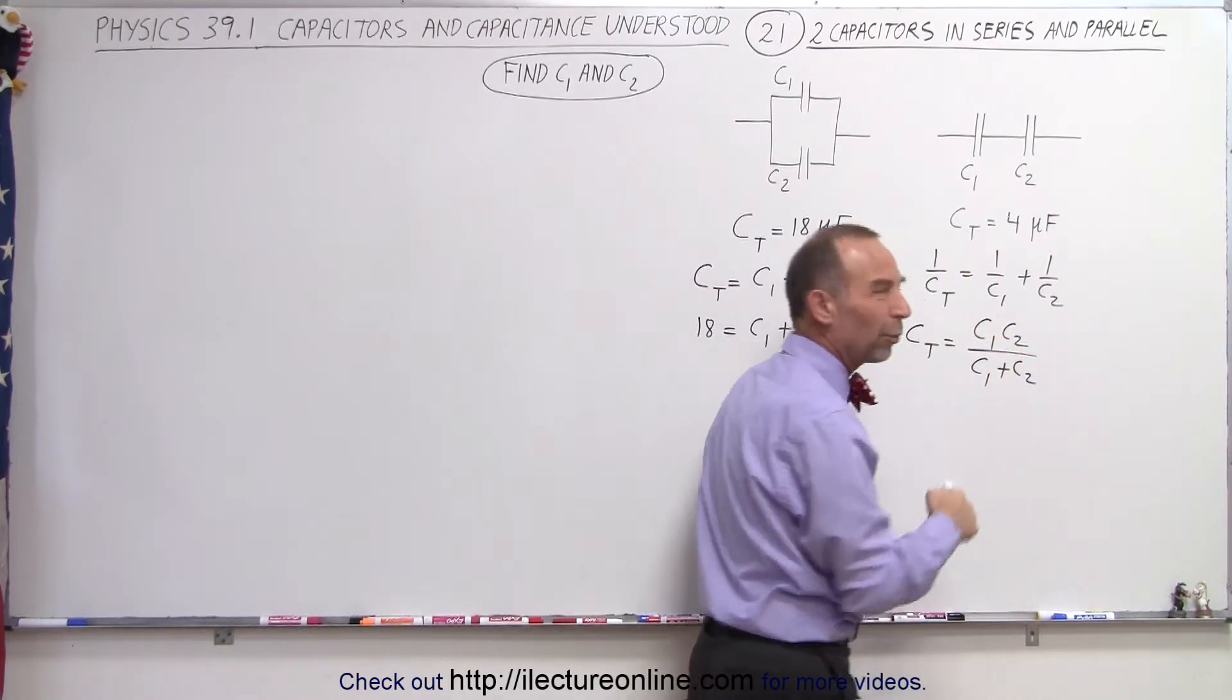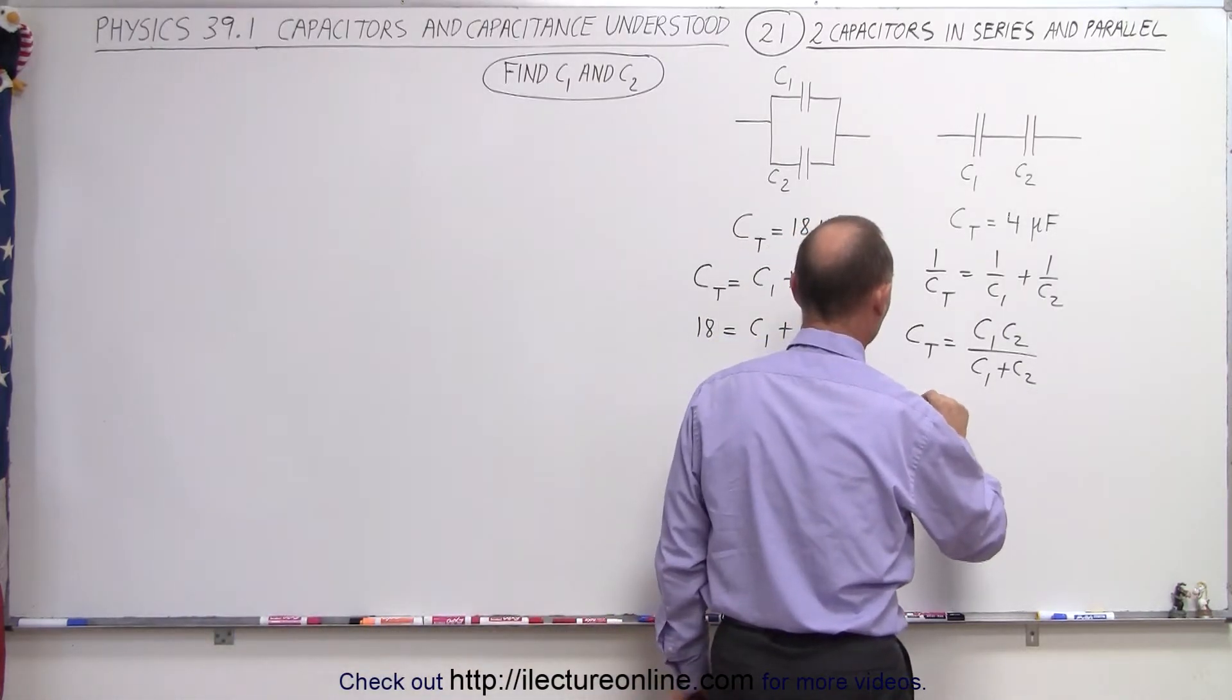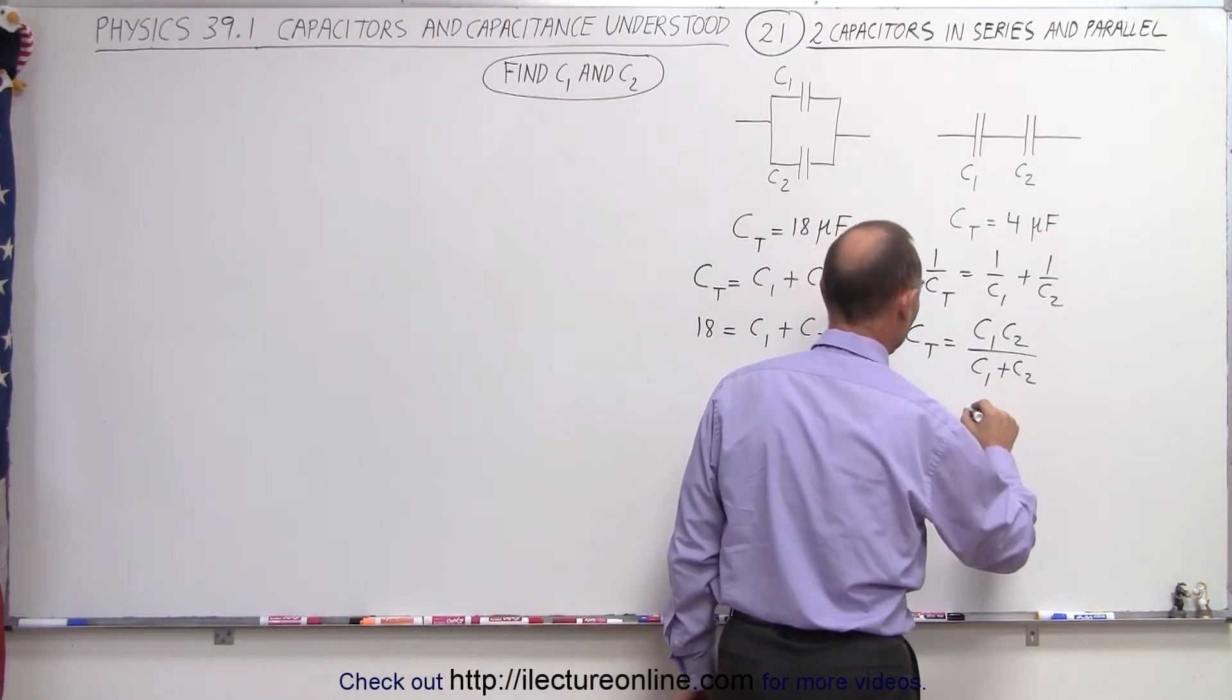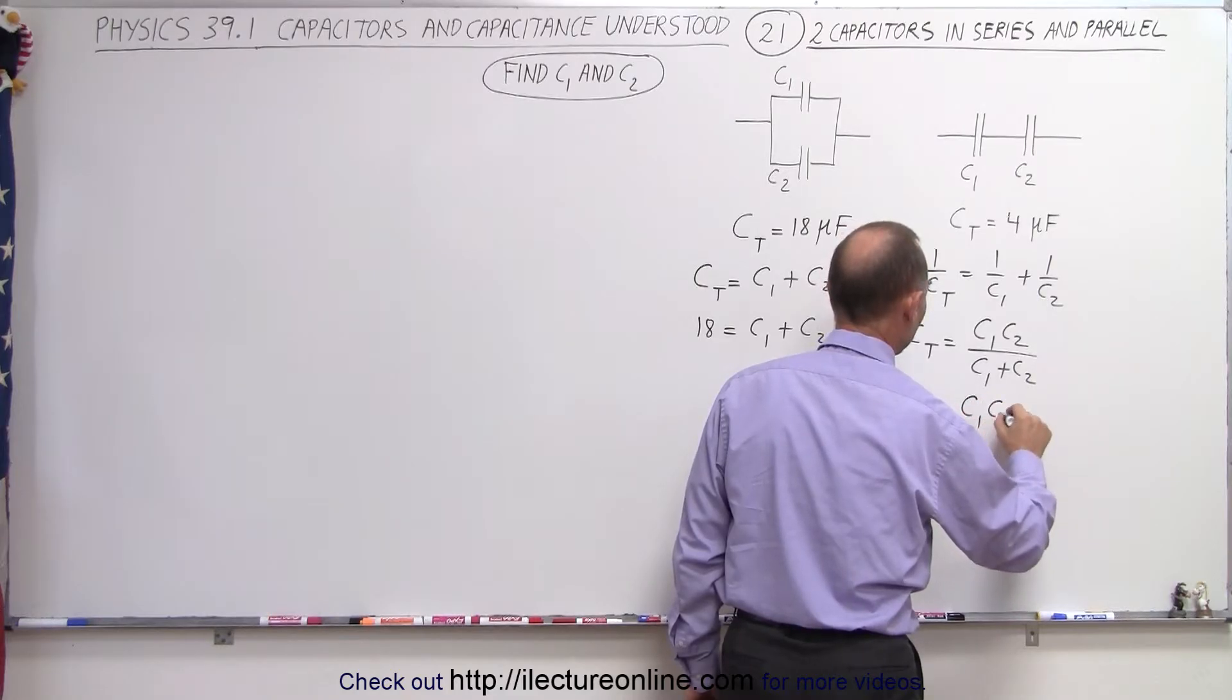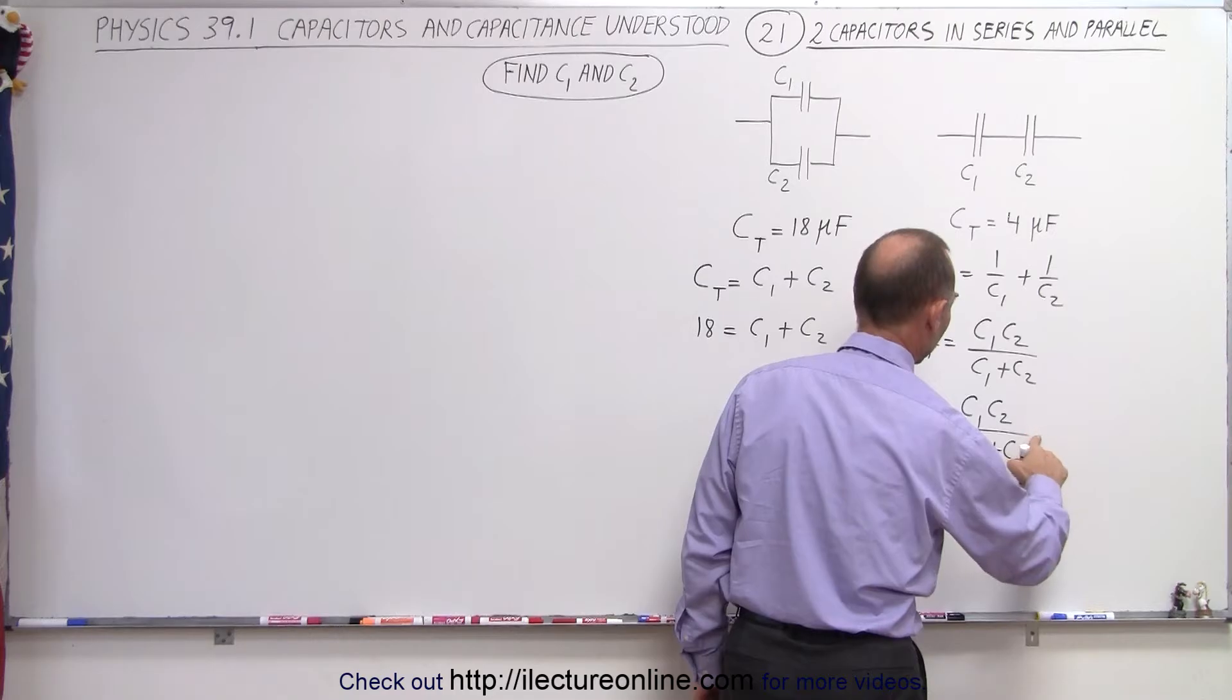I like this equation better, so I tend to use that one instead, which means in this case, that 4 is equal to the product. That would be C1 times C2 divided by the sum C1 plus C2.